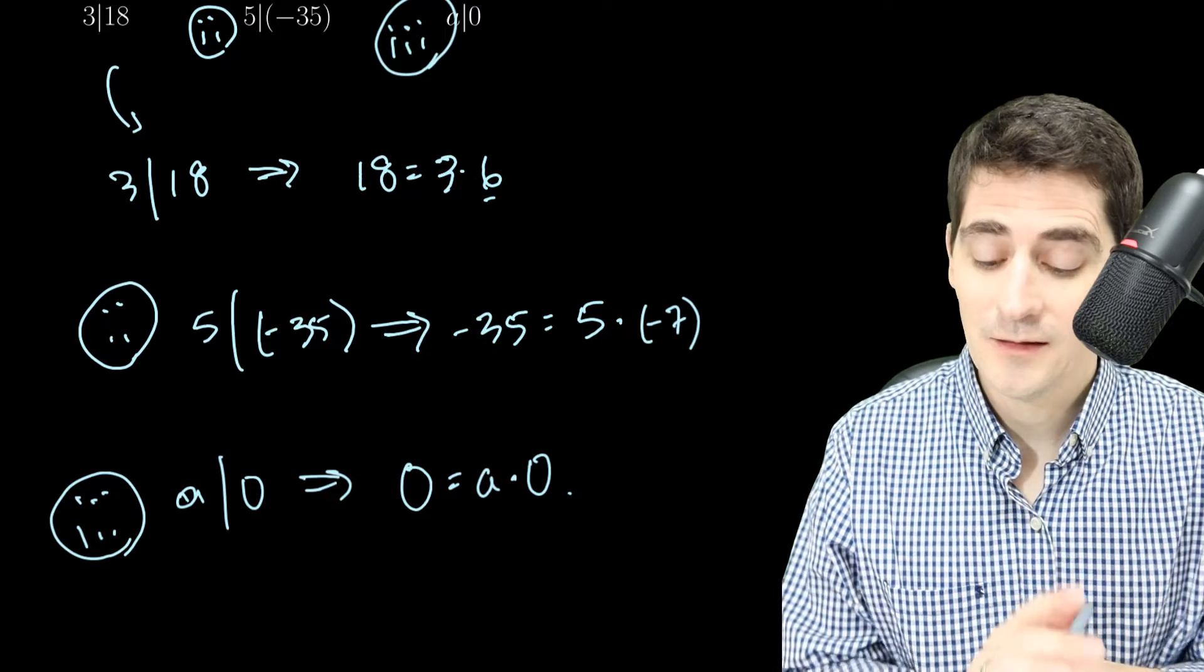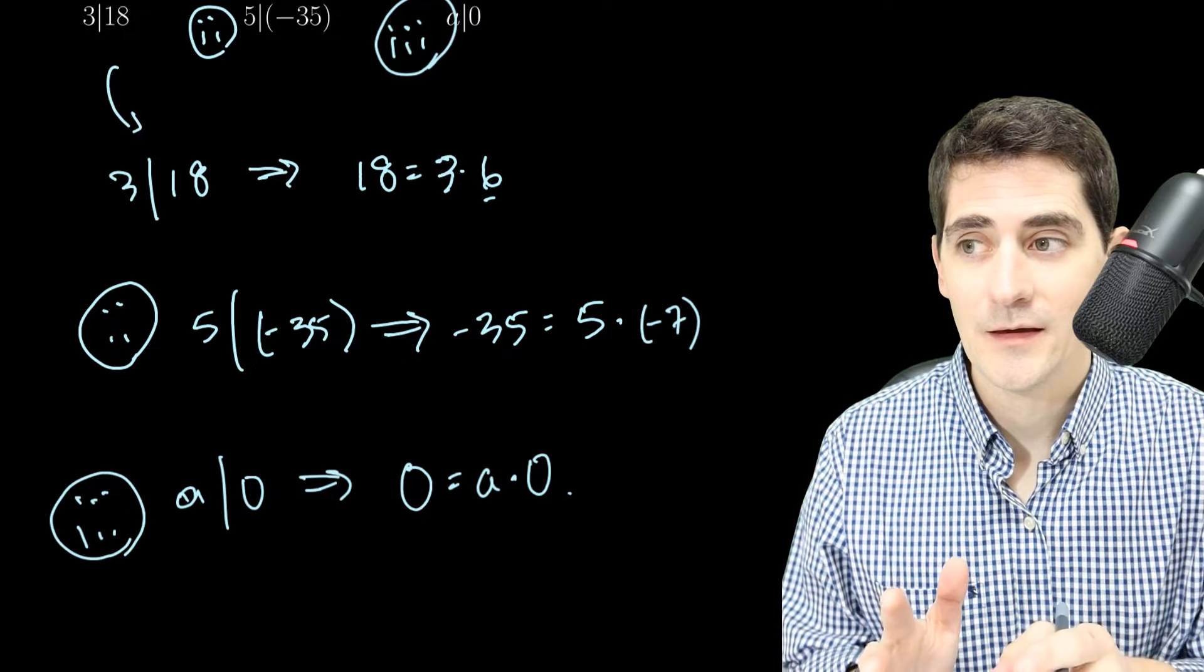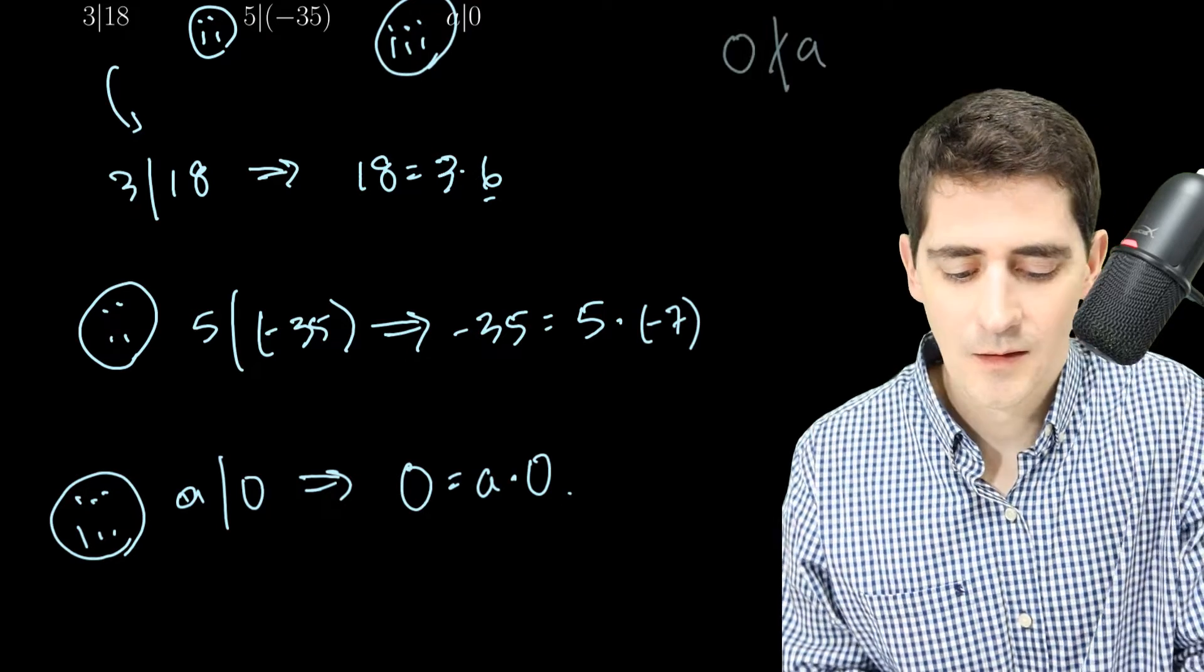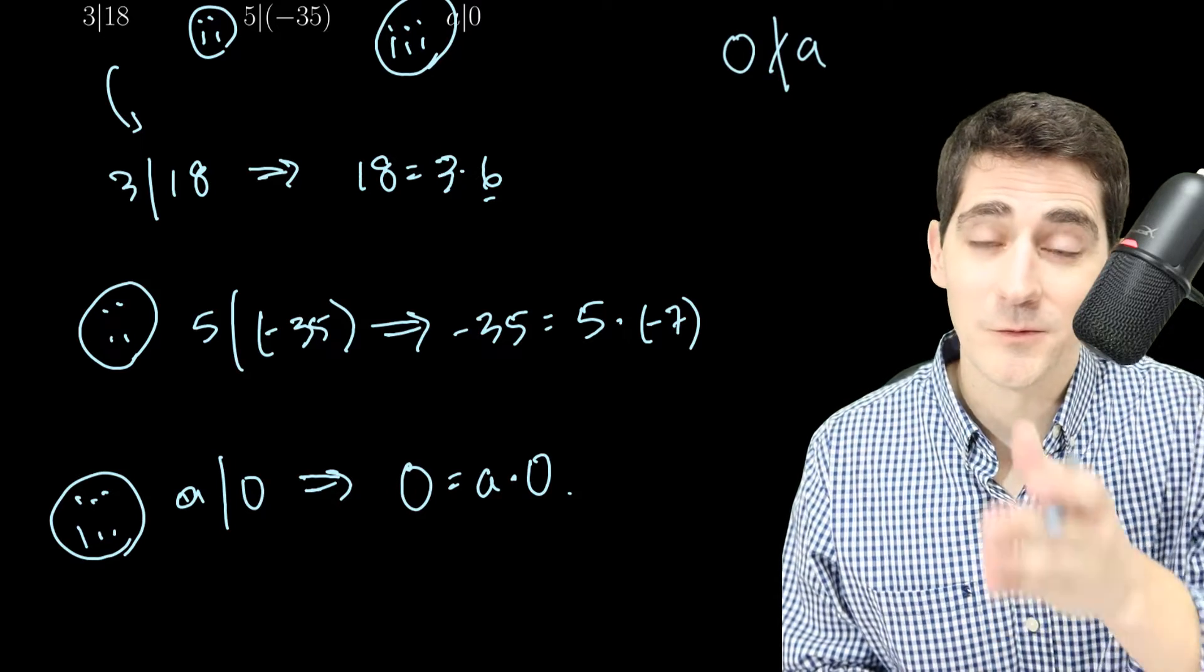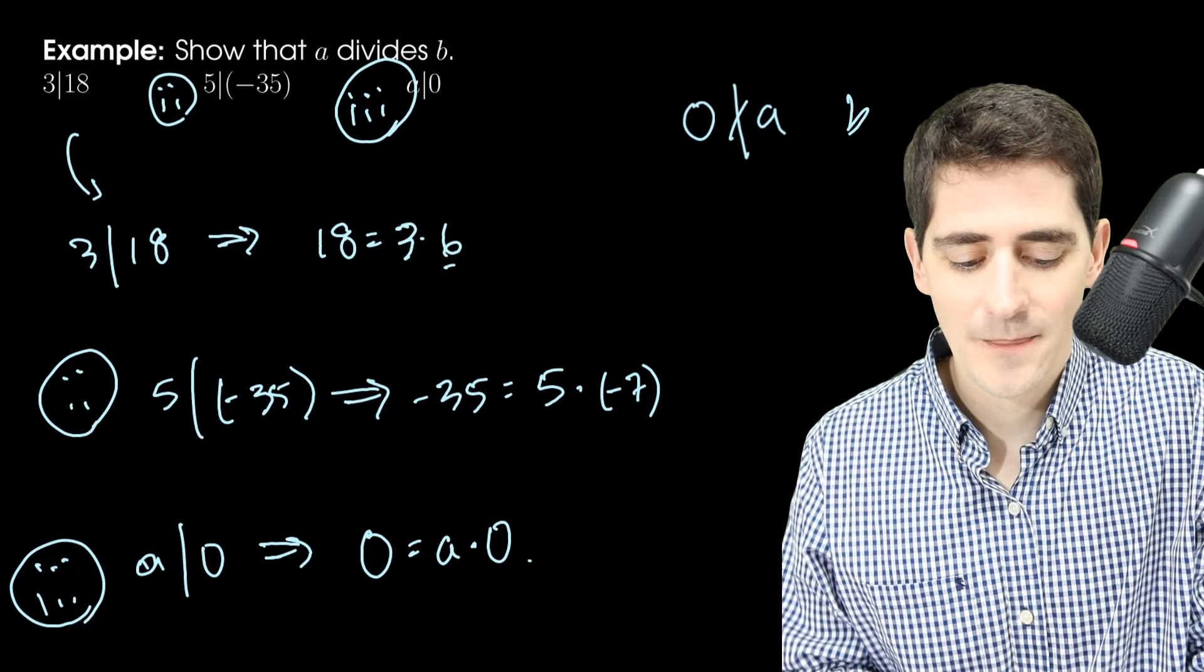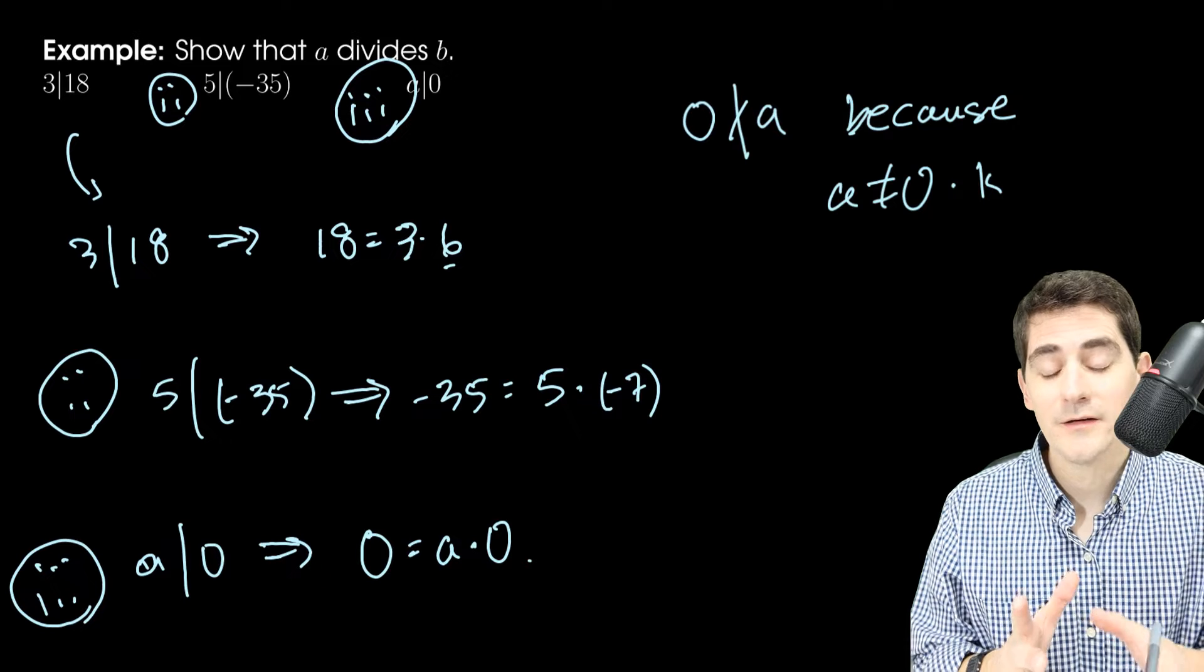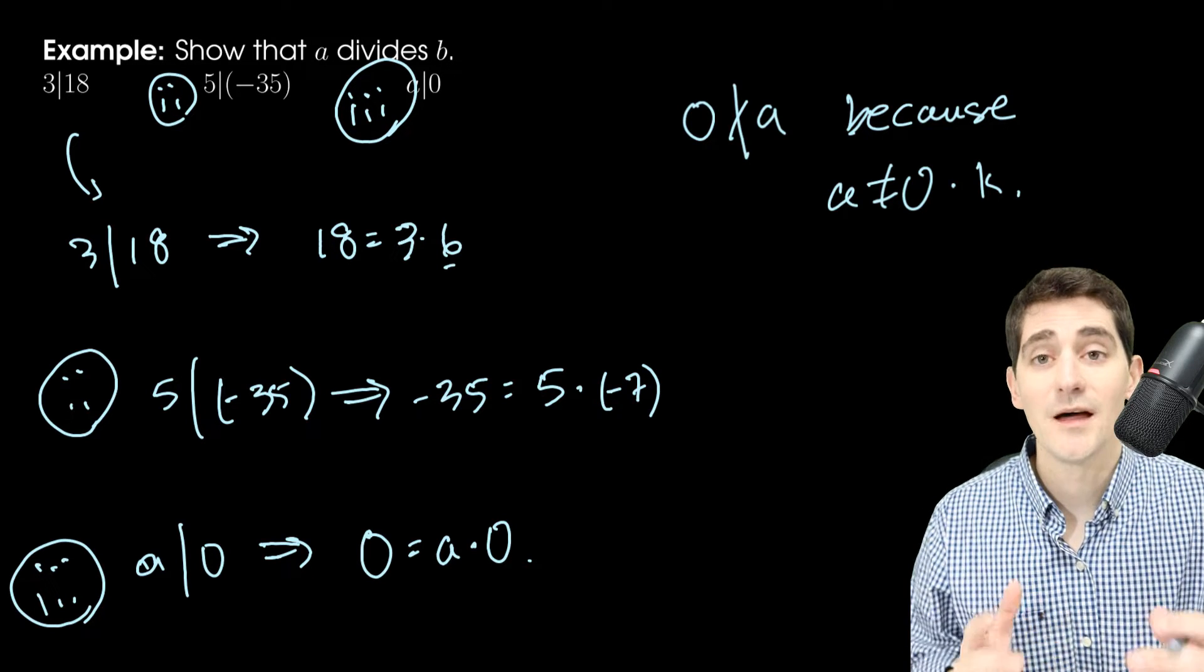Now, does 0 divide A? No, because I can't write A as 0 times something. So to show that 0 does not divide A, we use this notation. We use the divides line with the slash through it. So 0 does not divide A because you can't write A as 0 times some other integer. So we say it does not divide.